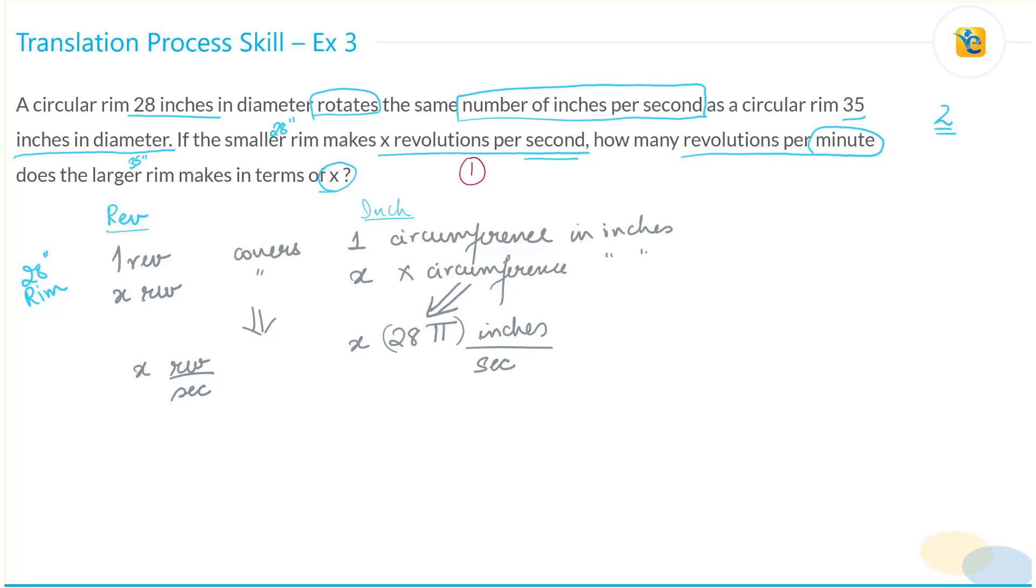Now we're going to write the same thing for the 35 inch rim. What would it be? Let's assume this number is Y revolutions per second, which would be equal to Y into 35 pi inches per second.